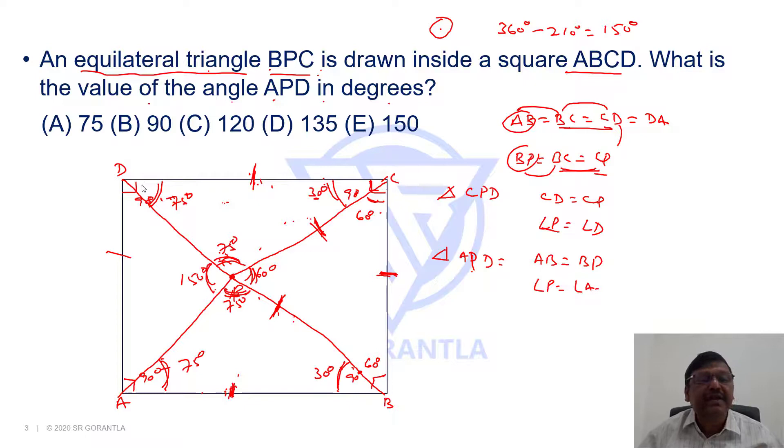Or another way of saying this is, you know, this entire angle is 90 degrees. Since this is 75, what is this portion? 15. Similarly, this entire angle is 90. If this is 75, what is this? 15. In this triangle APD, if it is 15 and 15, 30 degrees. So this has to be 150 degrees.